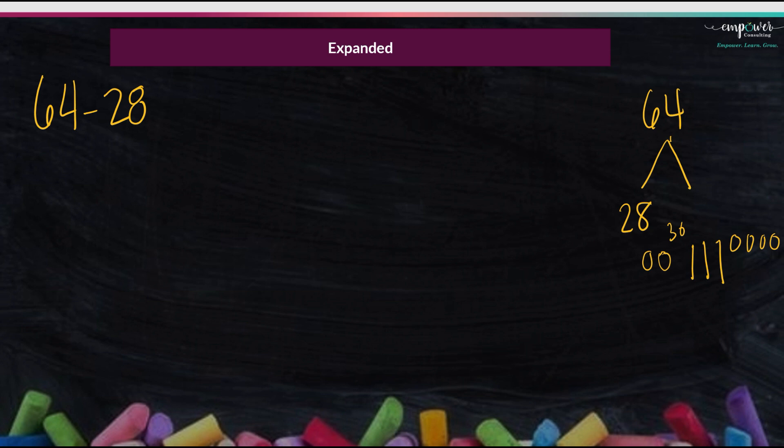So I would know that my total is 30, 1, 2, 3, 4, 5, 6, 36.